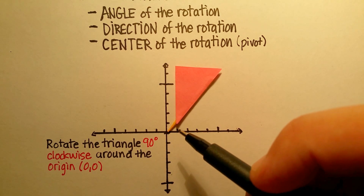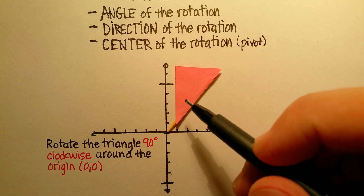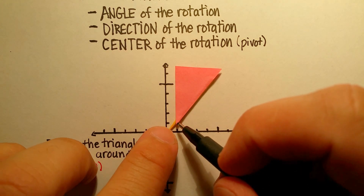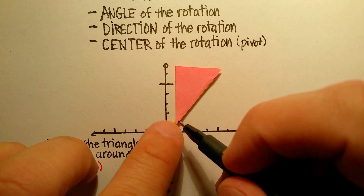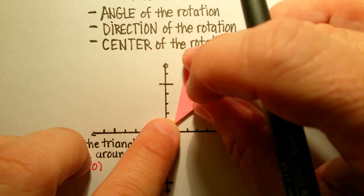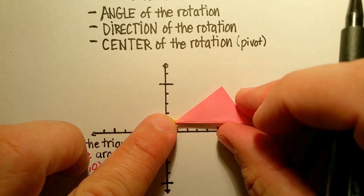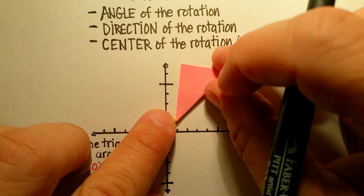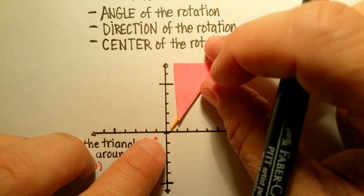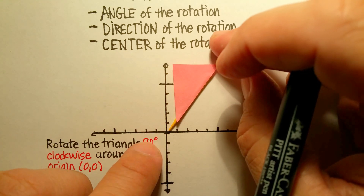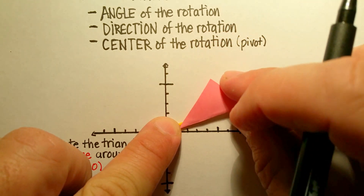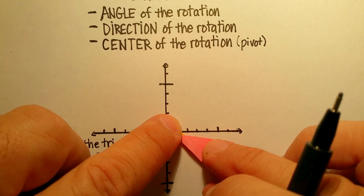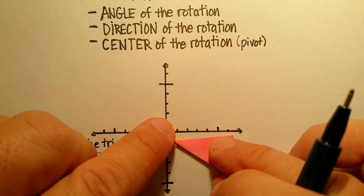You can actually rotate this triangle from any point that you want. I could rotate it from (1, 1), placing the vertex right on (1, 1) — I would just pivot it right there and that point would stay at (1, 1). Or I can rotate it around the origin 90 degrees clockwise, moving it until I hit 90 degrees, and then stop.